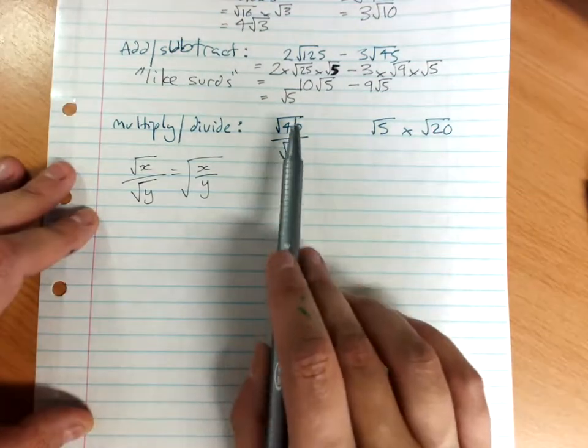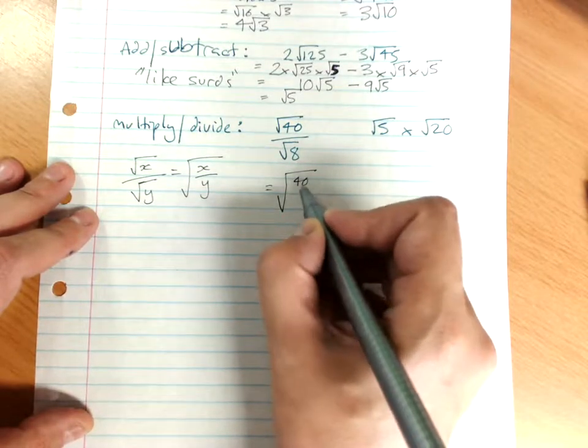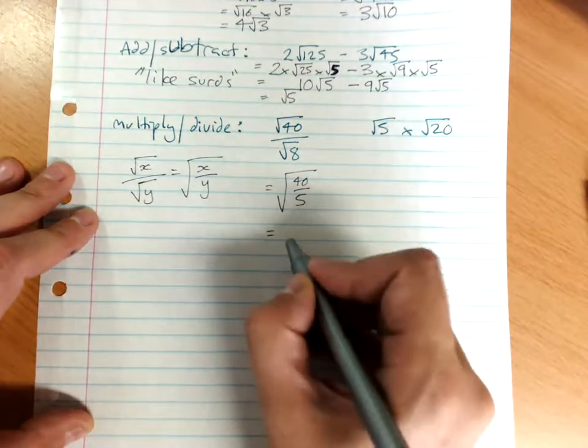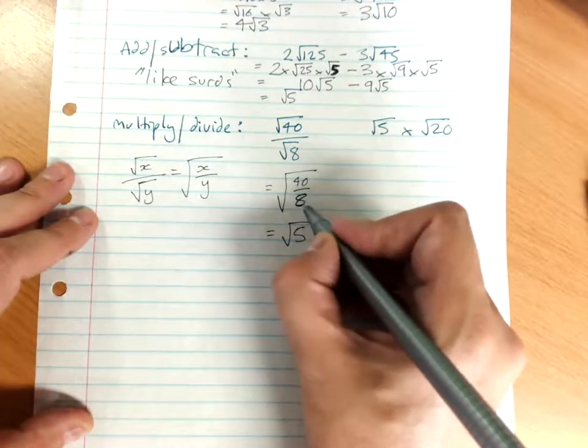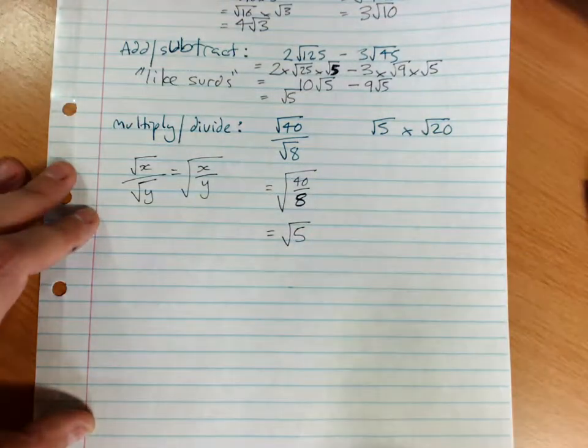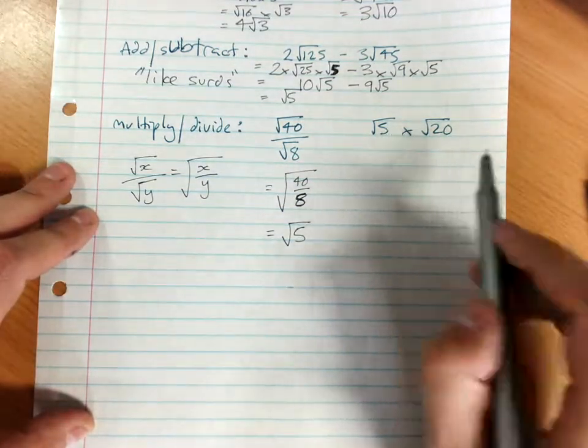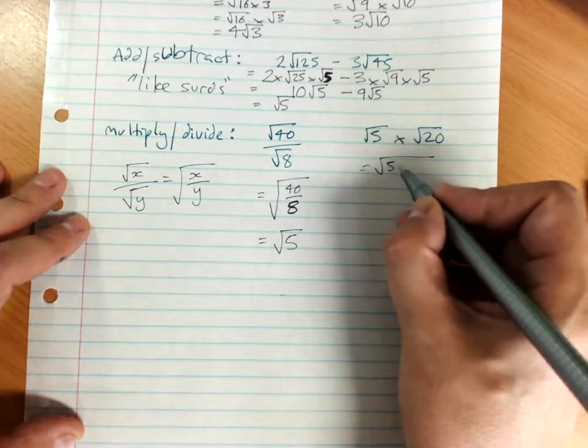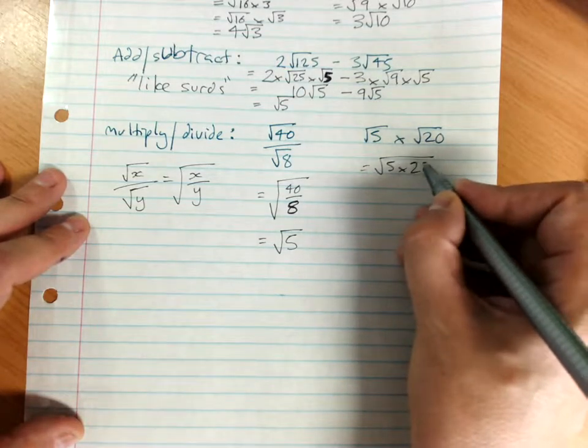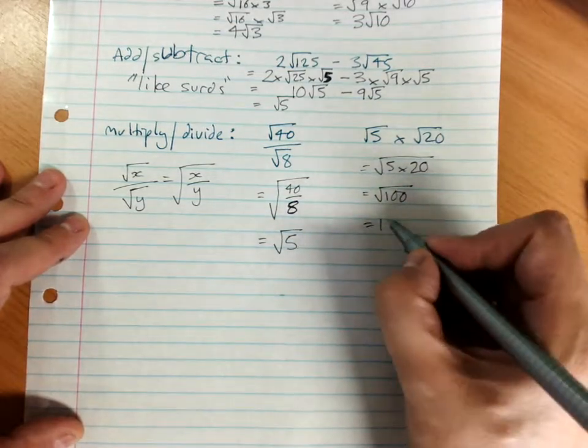So here, root 40 divided by root 8, well that's the square root of 40 divided by 8, so I've got the square root of 5. Root 5 times root 20, combine it under one root sign. That's the square root of 100, which in this case is 10.